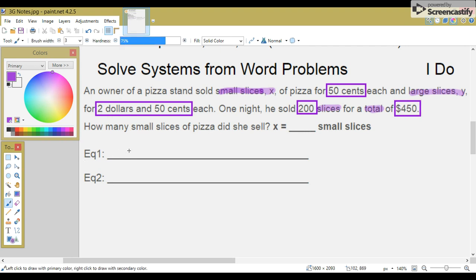Let's say that equation 1 was the total amount of slices. So, we have small slices, X, plus large slices, Y, equals 200 total slices.